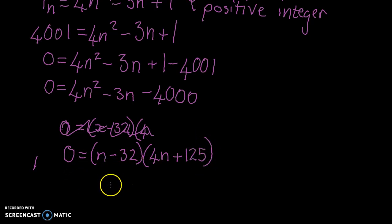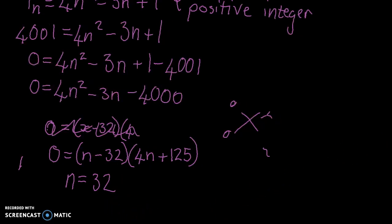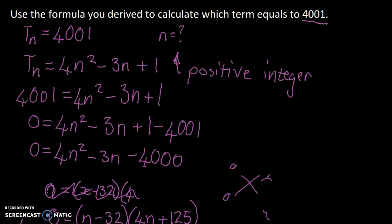So you could have found that by using the quadratic formula. In fact, it probably would be easier to do it that way rather than to factorize. So use the quadratic formula. I suppose that's useful skill to have in grade 11. And n equals 32. So when n equals 32, the value of the term will be 4001.